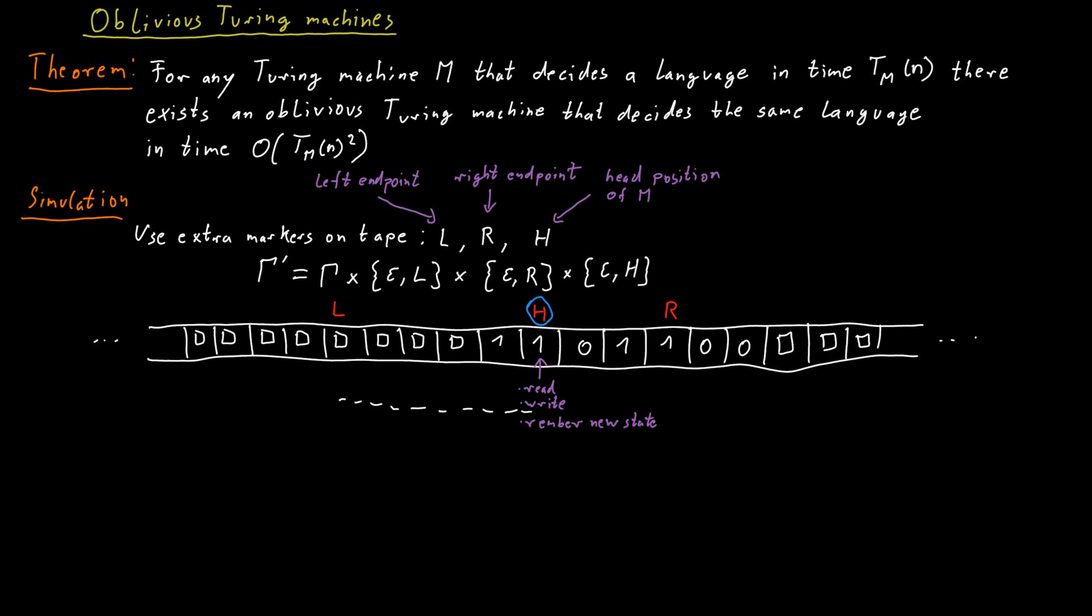Either it stays where it is, or it moves one position to the right or one position to the left. So the movement of the head is a bit tricky. What we have to do is, if we want to move the head position one cell to the right, we would have to erase the marker at the current position and then write it in the cell right next to it. So this is the easy part because we are moving in that direction anyway. Remember, we are moving from the leftmost marker to the rightmost marker. So we just erase the H at the current position, move one cell to the right, which we would have done anyway, and then place the H there.